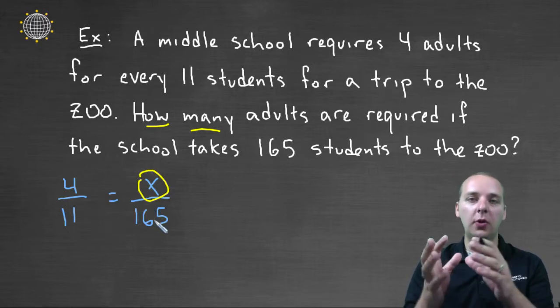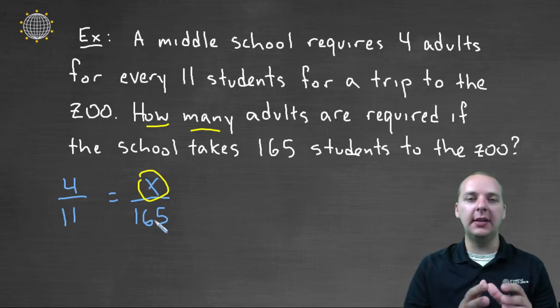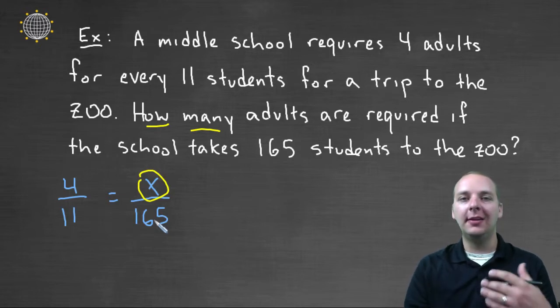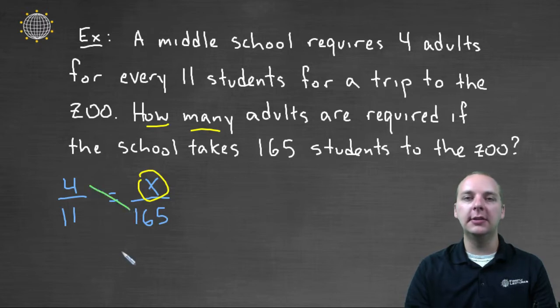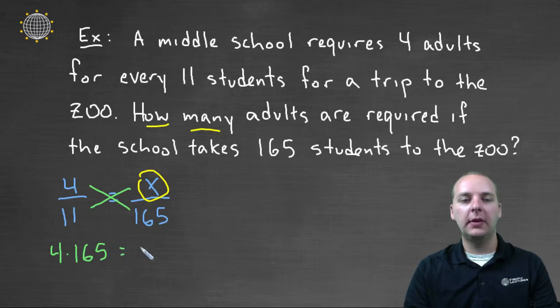So once we've taken our word problem and we've expressed it as a proportion, then we'll solve the proportion. The typical way that we solve proportions is by cross-multiplying. So we'll take four times a hundred and sixty-five and set it equal to x times eleven. So we'd have four times one hundred and sixty-five equals eleven x.